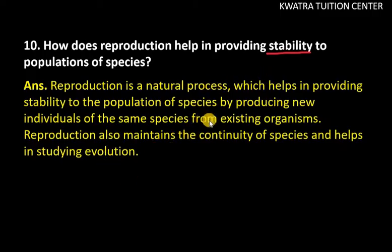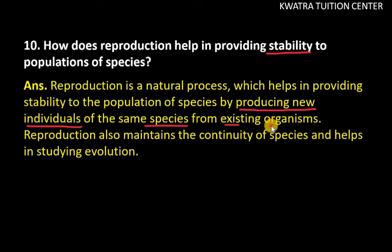Reproduction is a natural process that helps in providing stability to the population of species by producing new individuals or young ones of the same species from existing organisms. The existing organisms reproduce to form new individuals of their same type, making reproduction a continuous process.